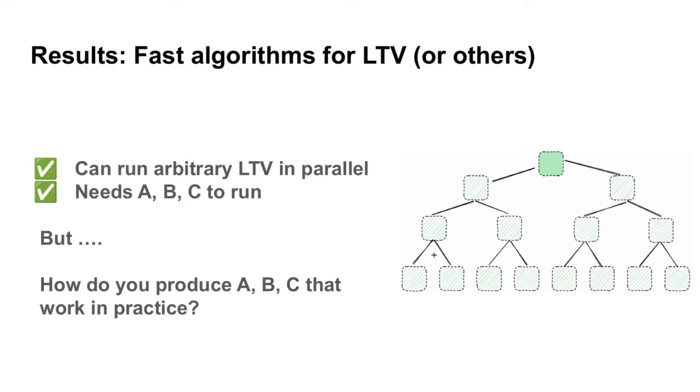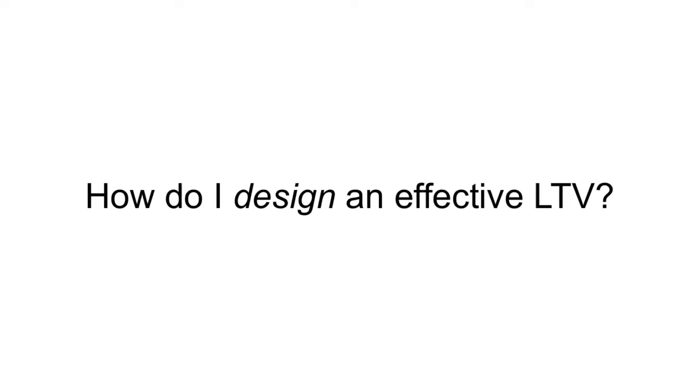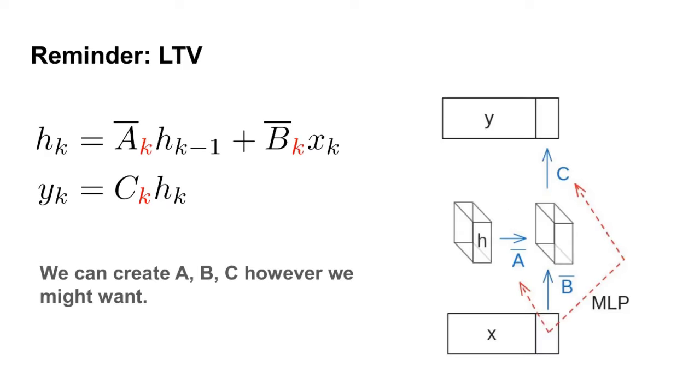So we've discussed some fast algorithms for LTV and others. But now our question is, how do we in practice compute those A-bar and B-bar and C matrices that are used in the linear recurrence? In this section, we'll discuss more about designing an effective LTV model. Recall from the first section that we defined a linear time-varying model as basically a linear recurrent neural network where the matrices A-bar, B-bar, and C vary with the position in time.